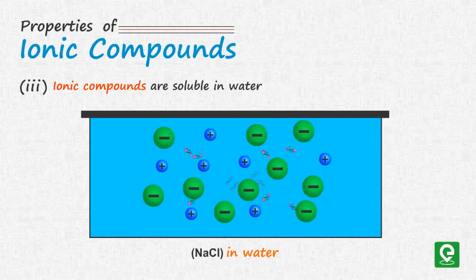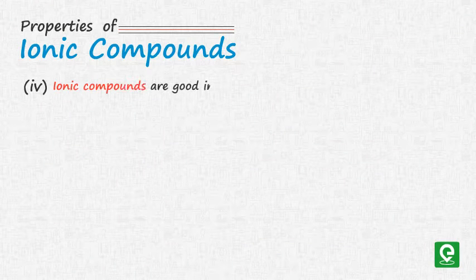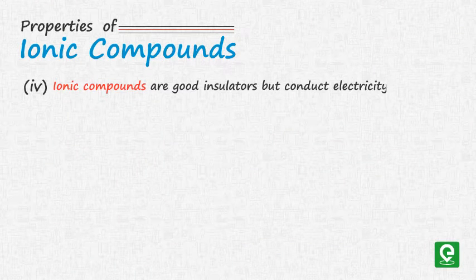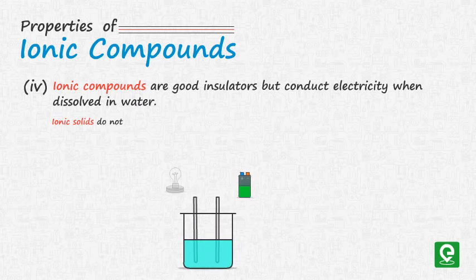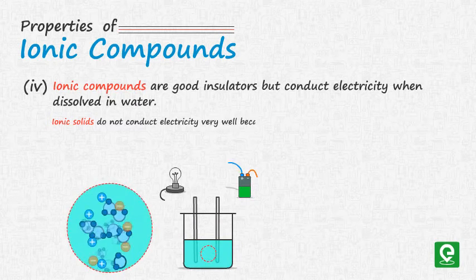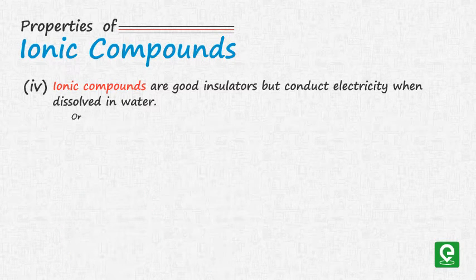Number four: ionic compounds are good insulators but conduct electricity when dissolved in water. Ionic solids do not conduct electricity very well because the ions are tightly bound to each other.